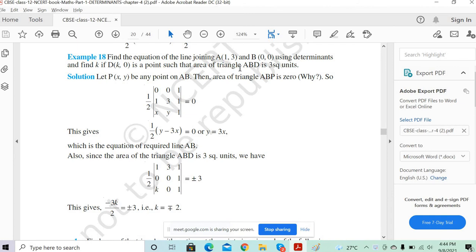Now, find the equation of the line joining point A(1,3) and B(0,0) using determinants and find K if D(k,0) is the point such that the area of triangle ABD is 3 square units.